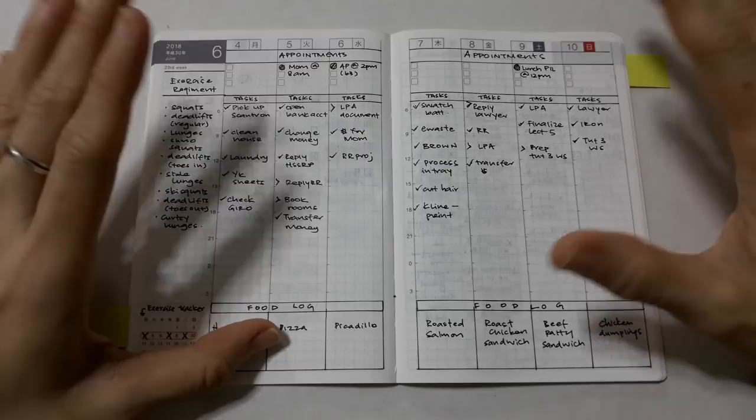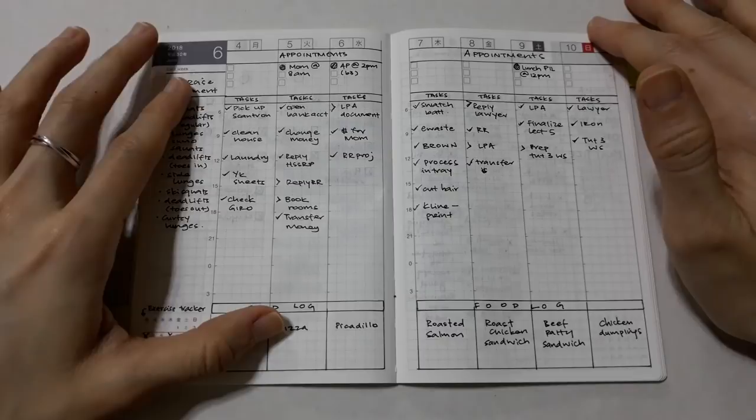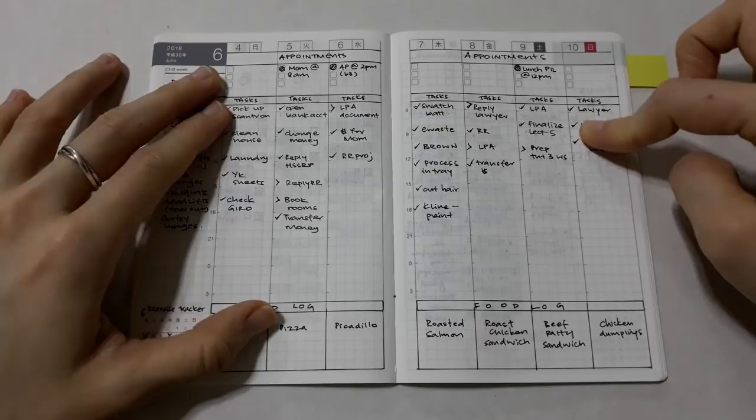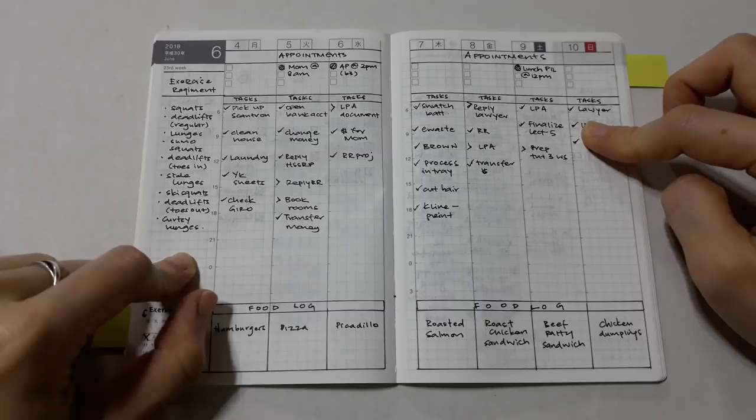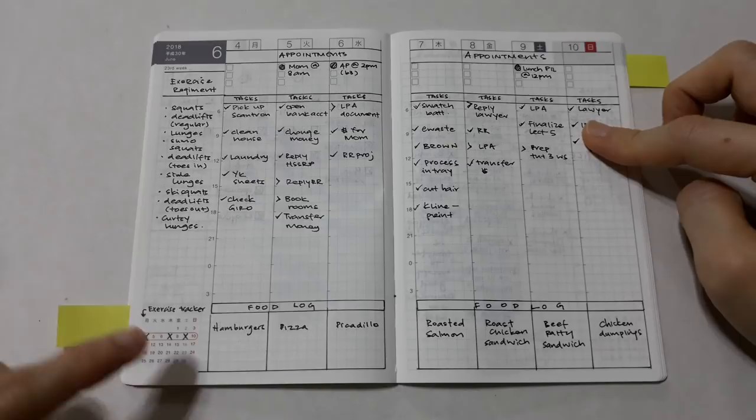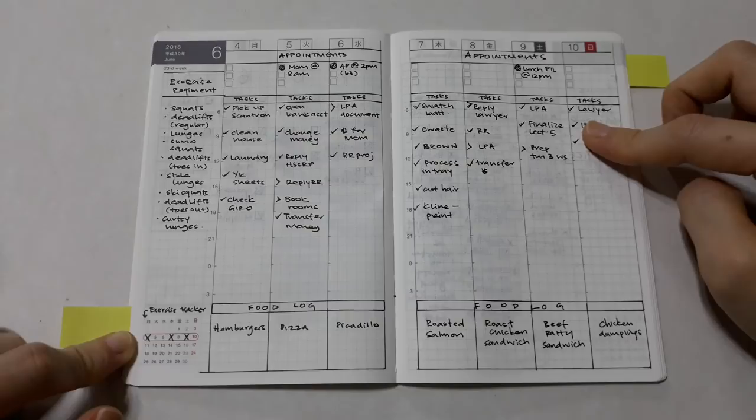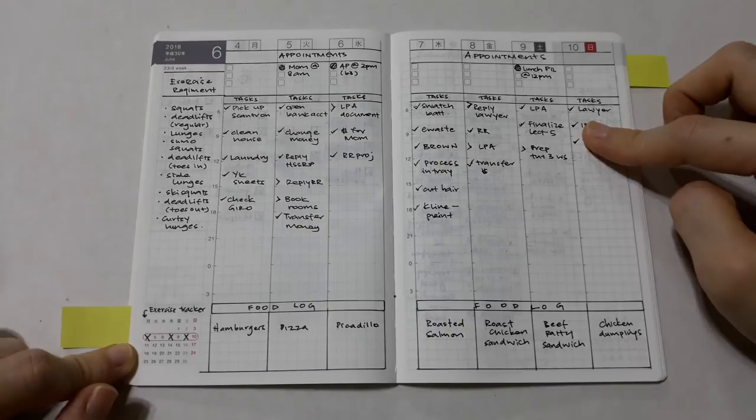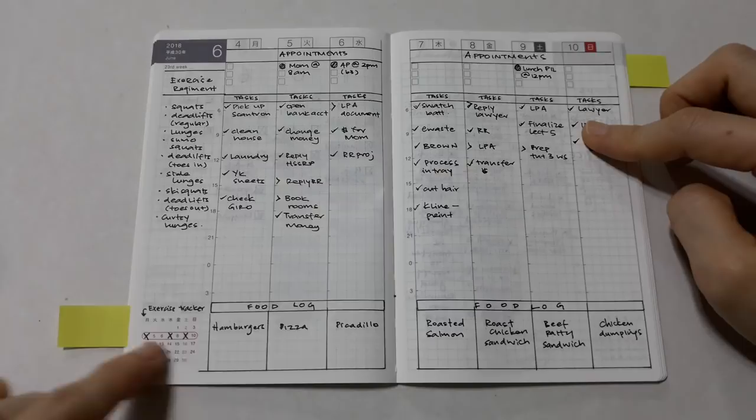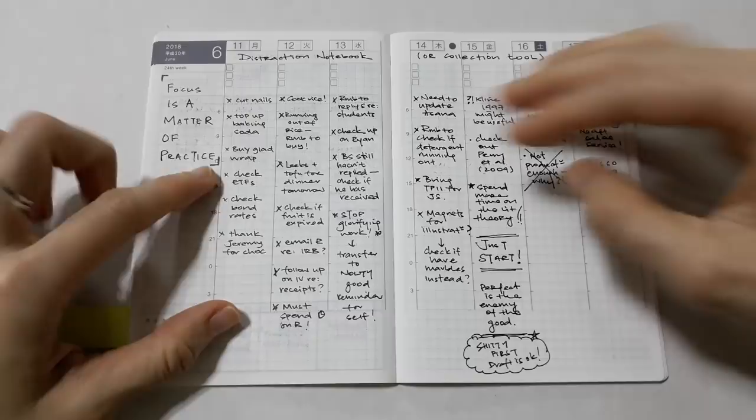Now when I was bullet journaling in my Rhodia, this was my favorite spread. It's simple to draw and it captures everything that I need. At the top are appointments, followed by the task list, and then the food log. I use this space to write down my exercise regimen, but obviously you can use it to write other notes as well. If you only have one habit, you could use the calendar to track that one habit. So here I use it as an exercise tracker—for each day that I exercise I put a cross on the calendar.